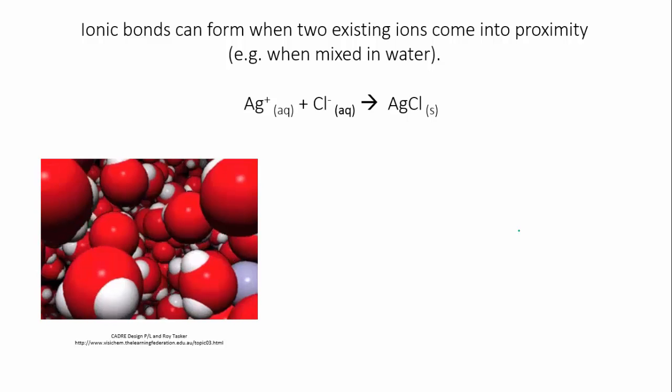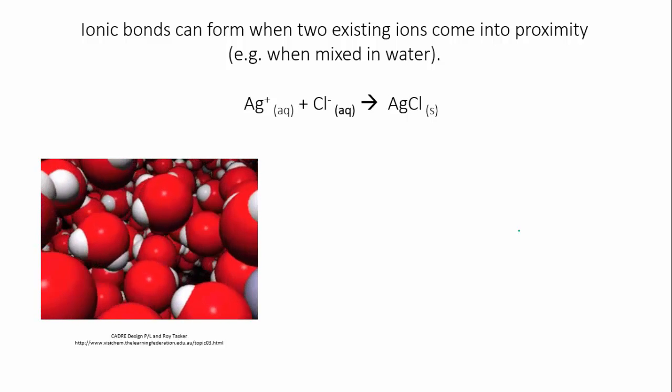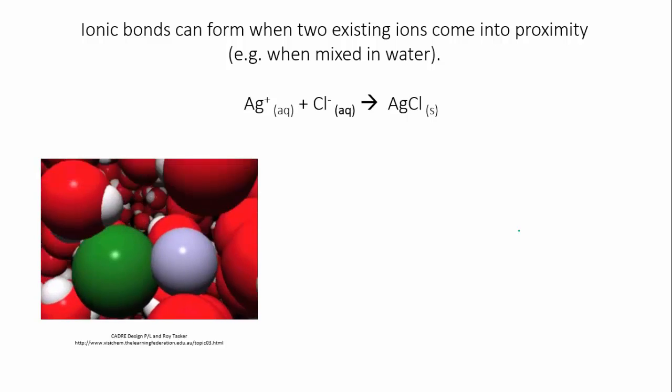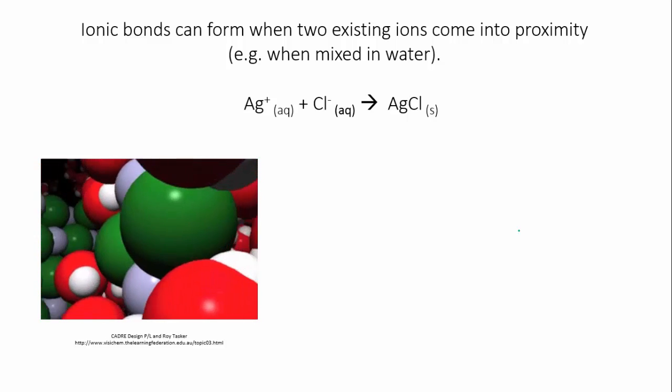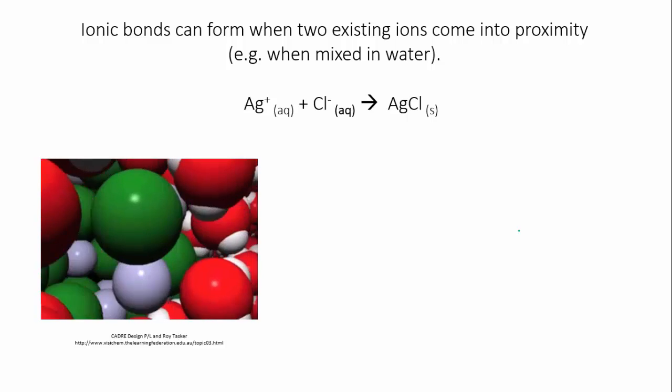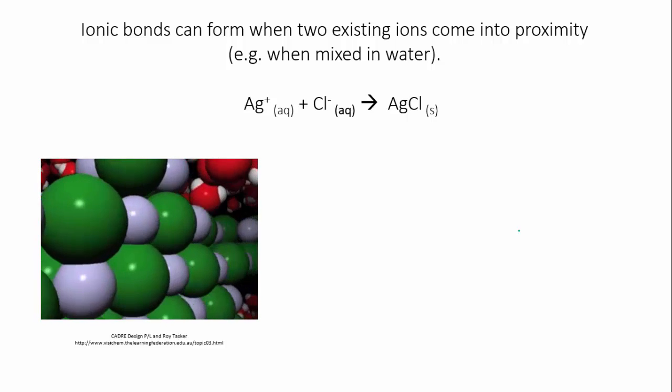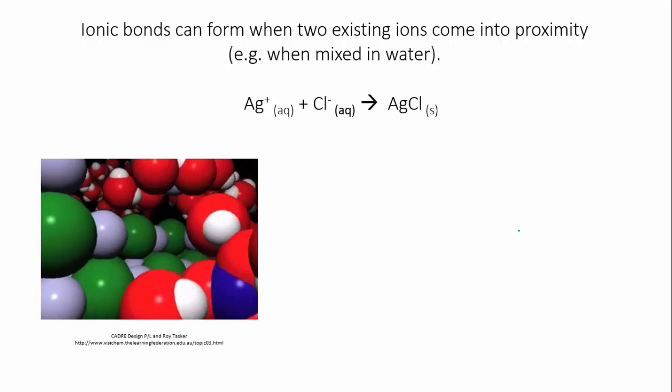In this video, which was produced by the VisChem project, you have a solution of water, the water molecules are red and white, containing pale purple silver ions and green chloride ions. You can see that as the oppositely charged ions meet each other, they stick together, that is, they're forming ionic bonds, and they begin to form a crystal.